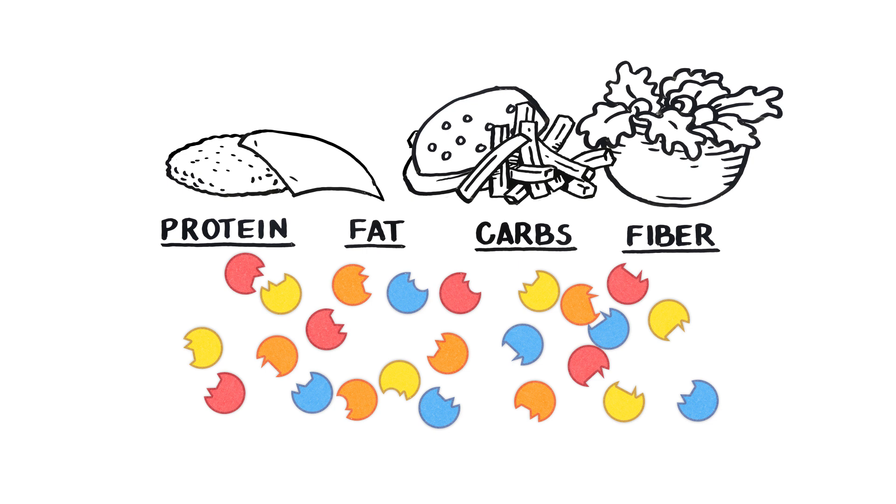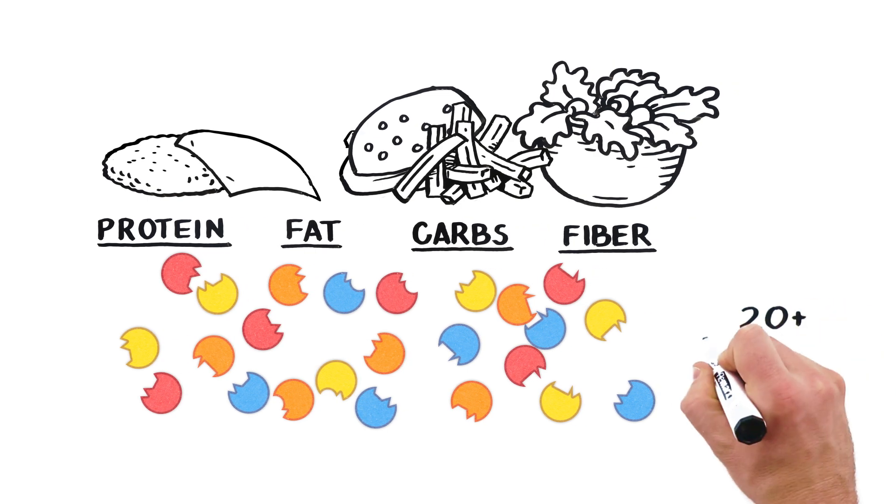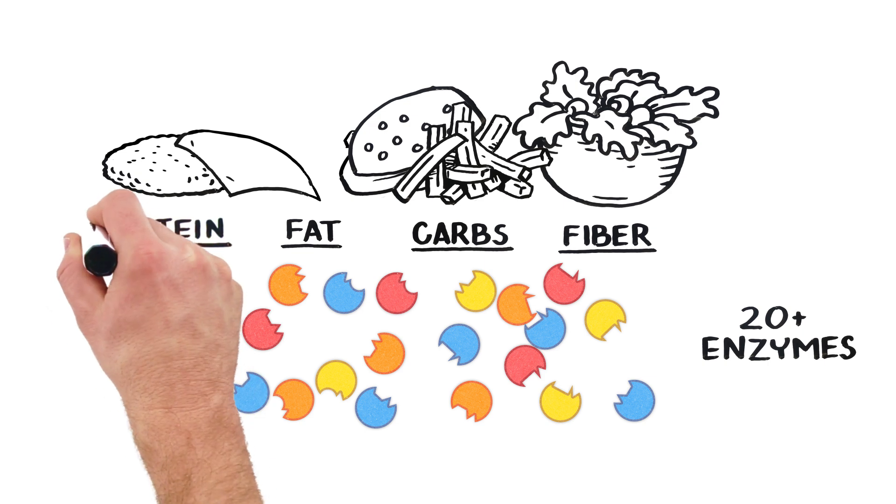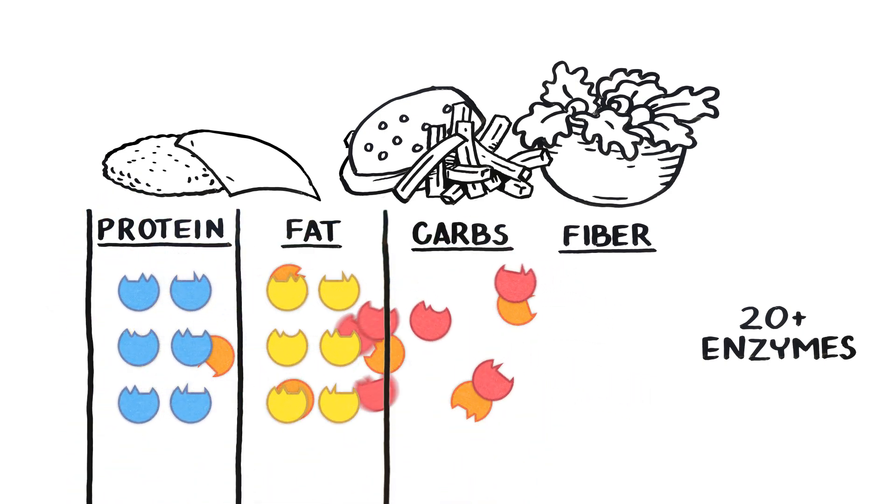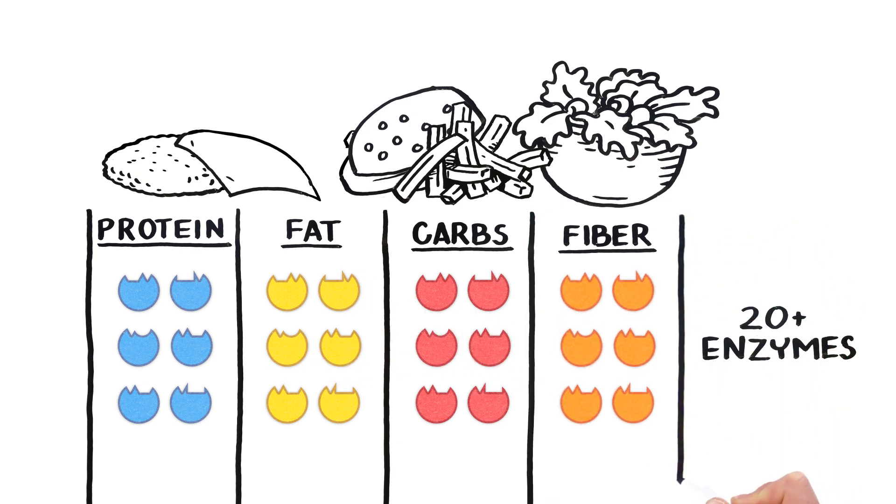Right, I said, which is why rule number one is so important. An enzyme formula with 20 or more plant-based enzymes is a good place to start. And if the enzymes are listed by the food groups they help digest, it will be even easier to know that you're getting all the digestive support you need.